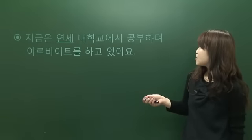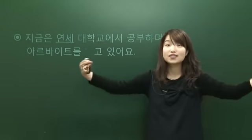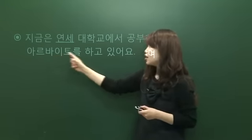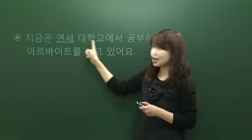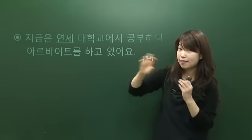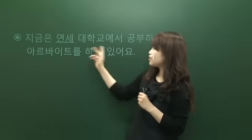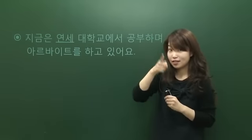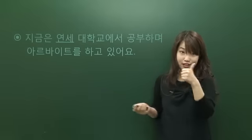지금은 연세대학교에서 공부하며 아르바이트를 하고 있어요. It's a long sentence but easy. 지금은 — now. 연세대학교에서 — at Yonsei University. 공부하며 — studying at the same time. 아르바이트를 하고 있어요 — working part-time. So: I'm studying at university and working part-time now.